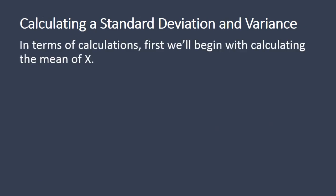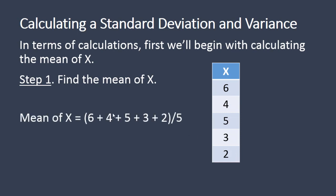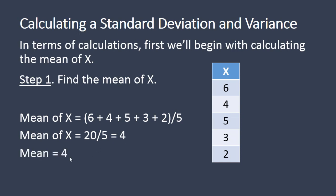In terms of the calculations, we'll begin by calculating the mean of x. To find the mean of x, we want to add all these values together and then divide by 5, the total number of values. So we have 10, 18, and 20 divided by 5, which gives us a mean of 4.